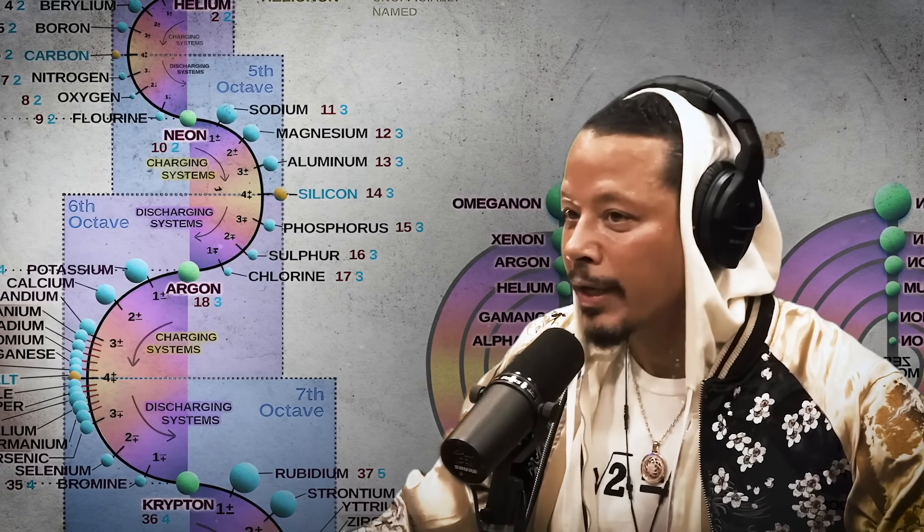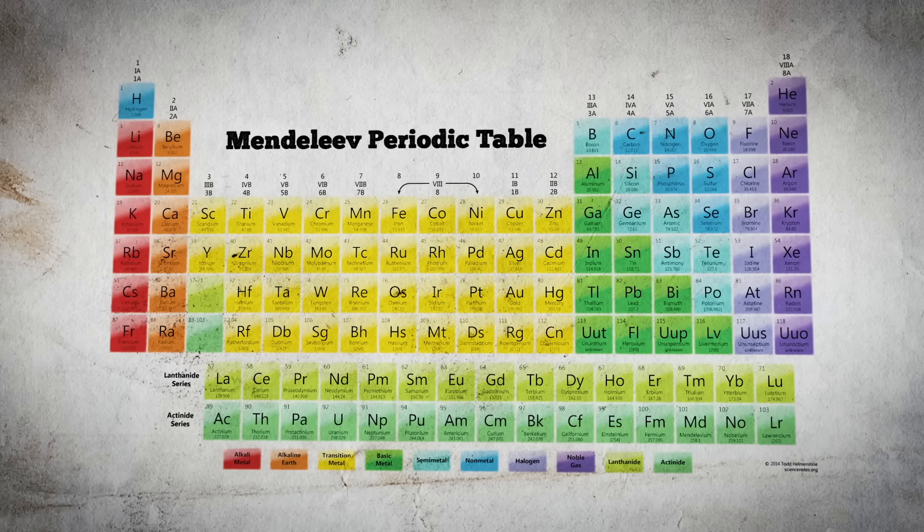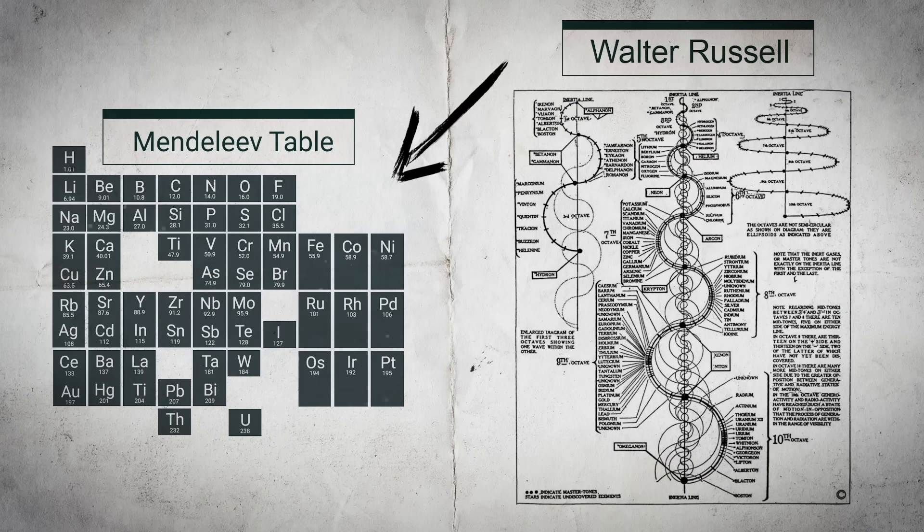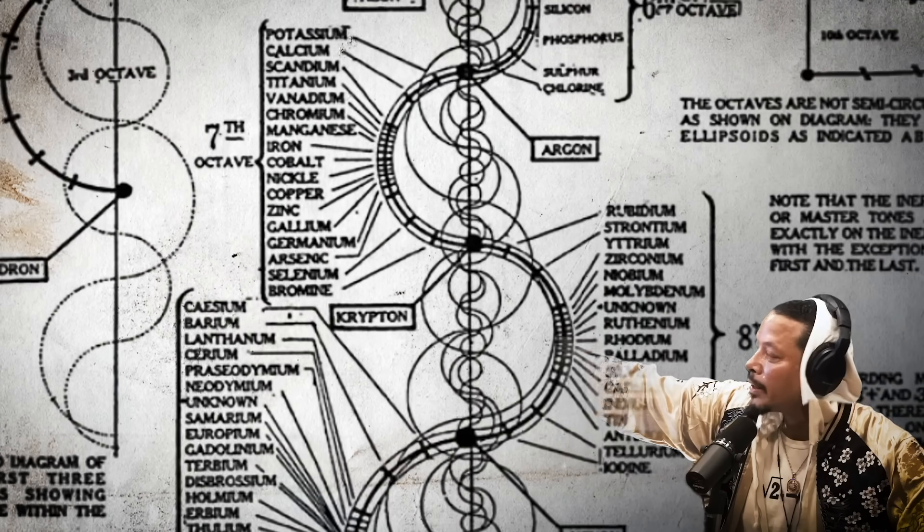Walter Russell's periodic table that he put together, now you compare that to Mendeleev's periodic table, you'll compare Walter Russell's to it, and you'll see something completely different. It's unwinding.